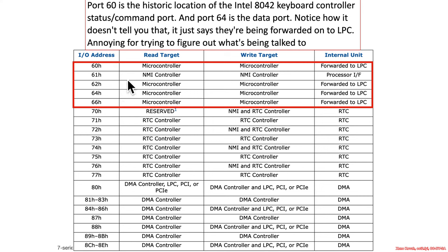For example, port 60 has historically been used for the Intel 8042 keyboard controller. Given the chip number, you can expect that this has been used for a very long time — since around the time of the first IBM PCs. Port 60 is used as an index into the keyboard controller and port 64 is used as a data port. But you don't get any of that detail by just looking at the datasheet. It just says it's a microcontroller; it doesn't tell you what it is, how you access it, what the commands are, or anything like that.